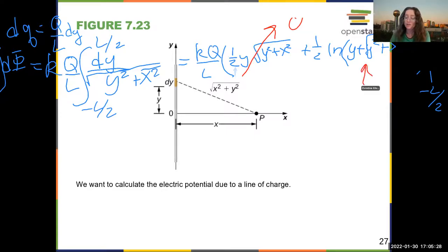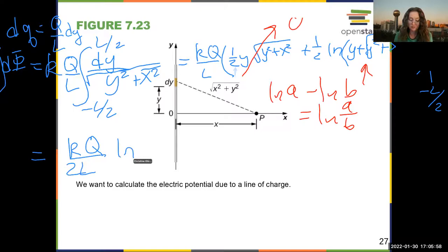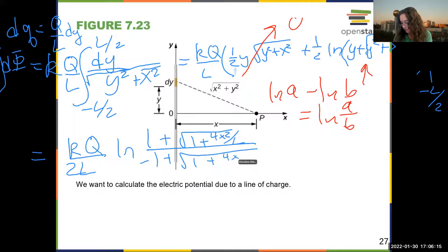This one does not. But if you remember, natural log of A minus natural log of B is natural log of A over B. So some ugly algebra, which is left as an exercise for the student, lets you get this to KQ over 2L times the natural log of 1 plus the square root of 1 plus 4X squared over L over negative 1 plus 1 plus 4X squared over L. Now, your book wrote it a little differently. That's cool. Doesn't matter.